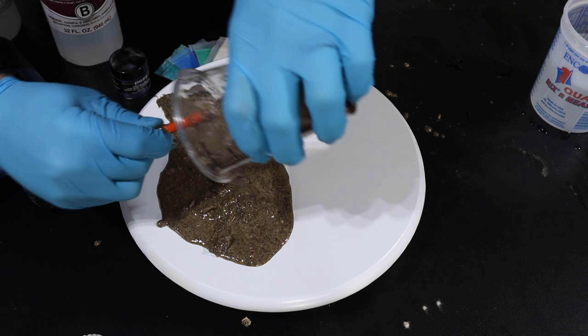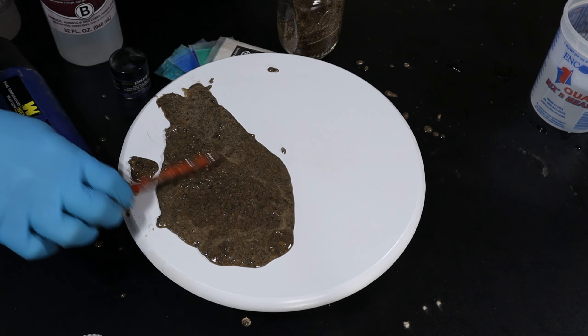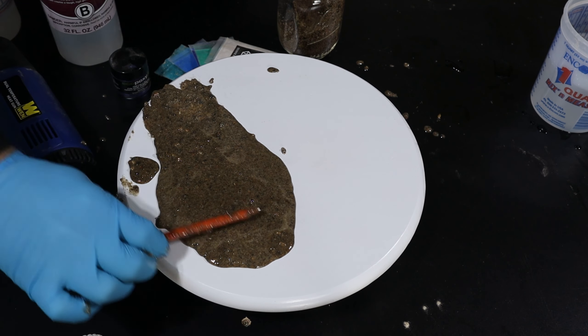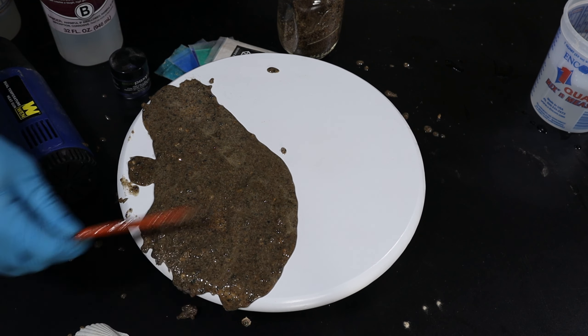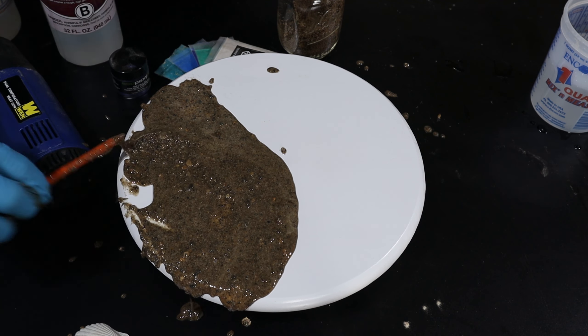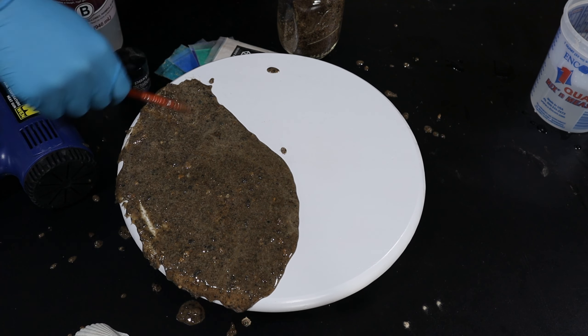Now tabletop epoxy is self-leveling so make sure your canvas is completely level before you start working. With the sand you just want to make it look like a shape that you want it to look like. It doesn't really matter what it looks like, it just needs to look something like a beach, so make sure it's a little curvy and that's about it.